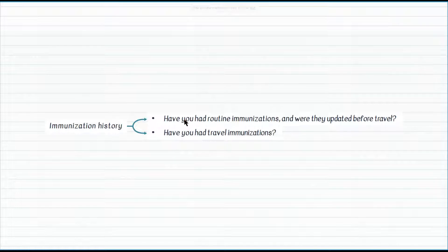What are the vaccine recommendations for asplenic hosts? Asplenic patients require vaccination against Haemophilus influenzae type B, meningococcus, and pneumococcus. And finally, provide examples of vaccines specifically provided to travelers: Japanese encephalitis, polio, rabies, typhoid, yellow fever, and hepatitis A.